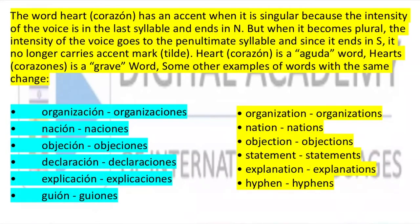For example, the word corazón has a tilde when it is singular because the intensity of the voice is on the last syllable — corazón is an aguda word. Hearts — corazones — in plural, the intensity moves to the penultimate syllable, and since it ends in S, it no longer carries an accent mark — corazones is a grave word. Other examples: organización (singular, with tilde), organizaciones (plural, no tilde). Nación has a tilde, but naciones does not. Objeción — objeciones. Declaración — declaraciones. Explicación — explicaciones. Guión — guiones.